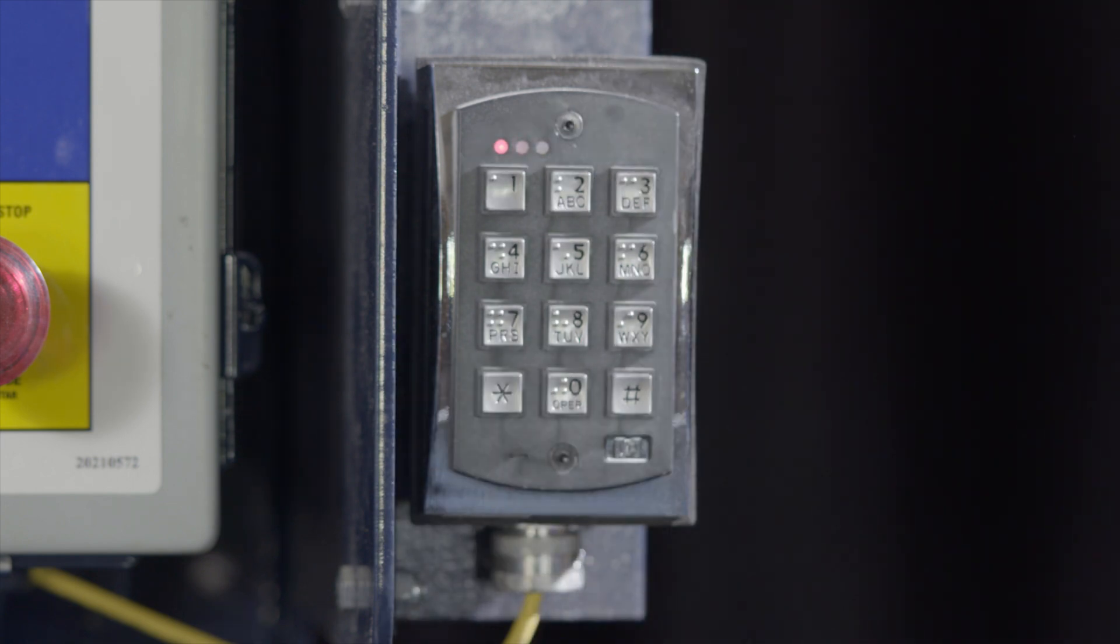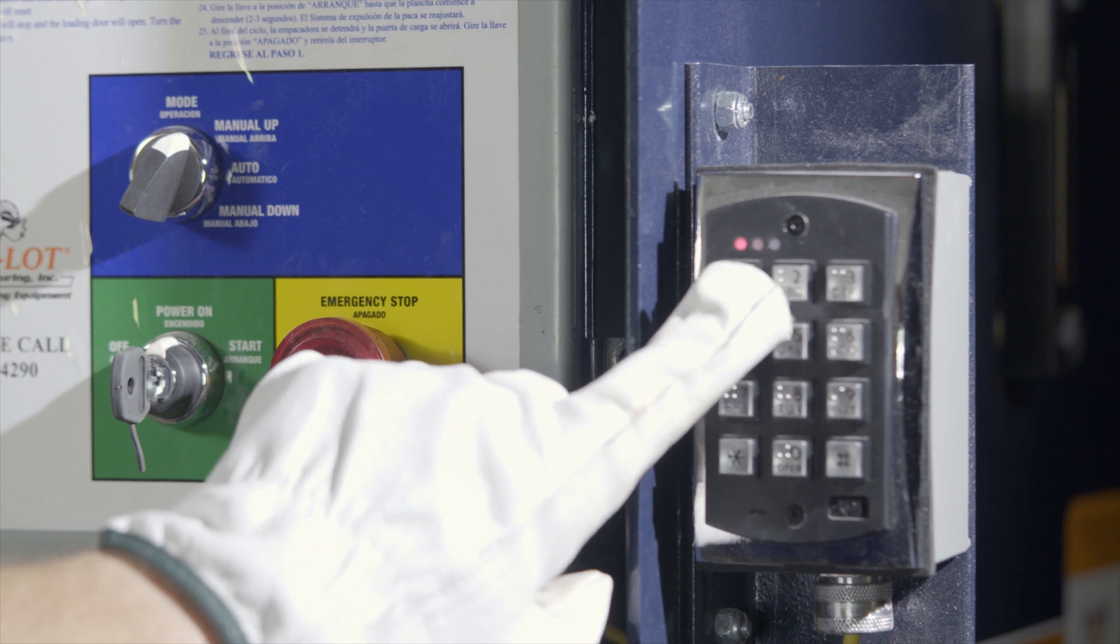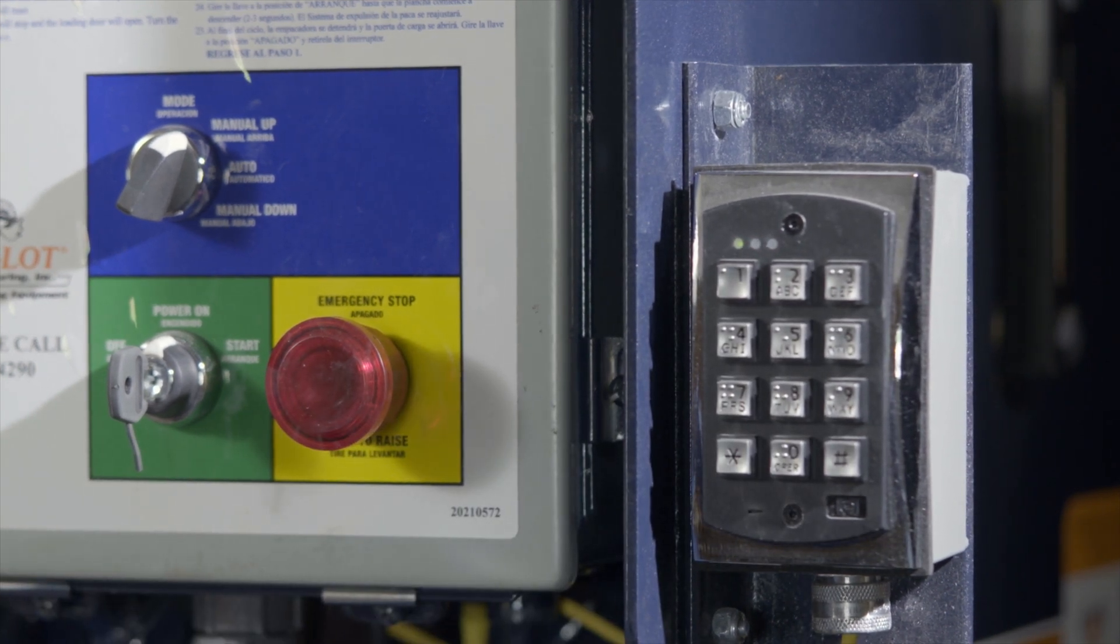Next, press the asterisk to exit the programming mode. Try your new code followed by the asterisk. The green LED will come on and the machine will run. If the green light does not come on or the machine will not run, restart the programming procedure.